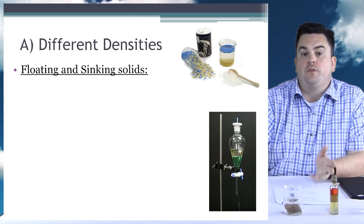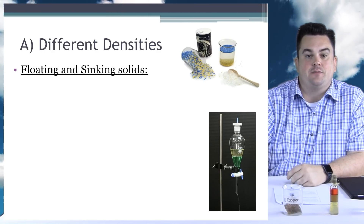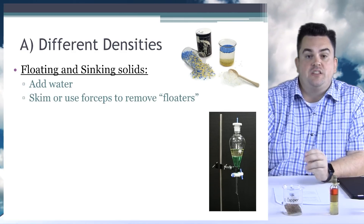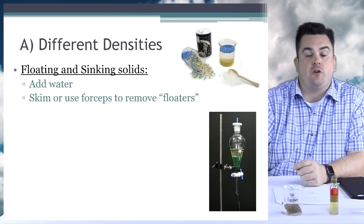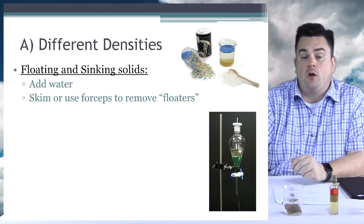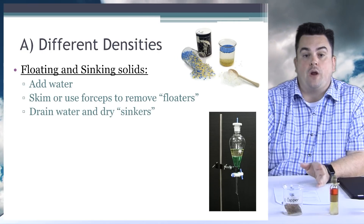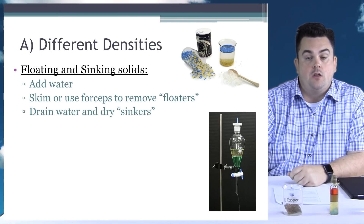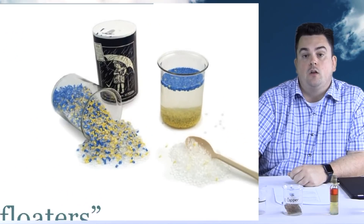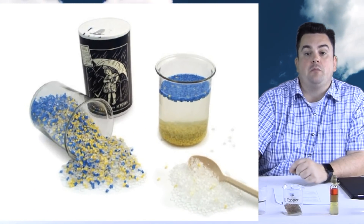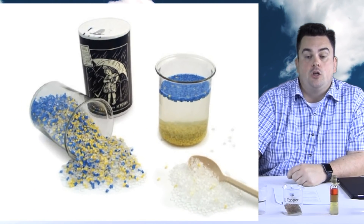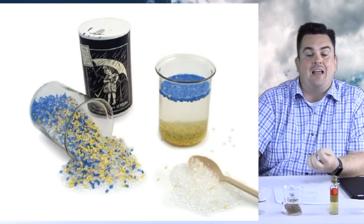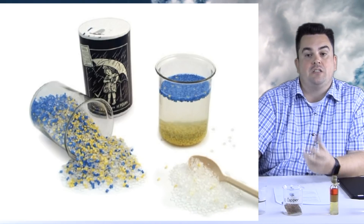Separating mixtures based on different densities — floating and sinking solids. Add water, then skim or use forceps to remove the floaters. Drain water and dry the sinkers. So if you take a look at our image, we have salt and floating beads. When we add the water, the salt will go to the bottom and the beads will float to the top.